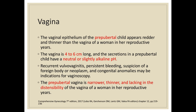The vaginal epithelium of the pre-pubertal child appears redder and thinner than the vagina of a woman in her reproductive years. The vagina is around 4–6 cm long, and the secretions in the pre-pubertal child have a neutral or slightly alkaline pH. Recurrent vulvovaginitis, persistent bleeding, suspicion of a foreign body or neoplasm, and congenital anomalies may be indications for vaginoscopy. The pre-pubertal vagina is narrower, thinner, and lacks the distensibility of the adult vagina.